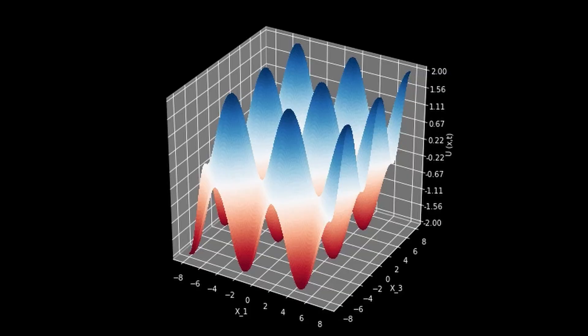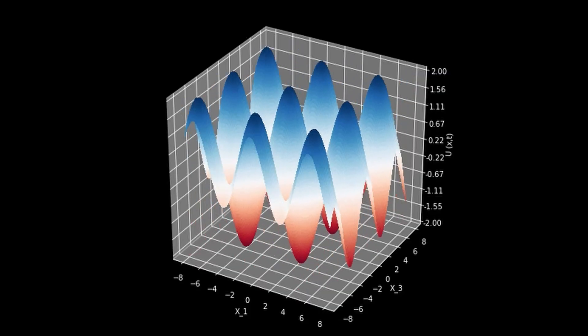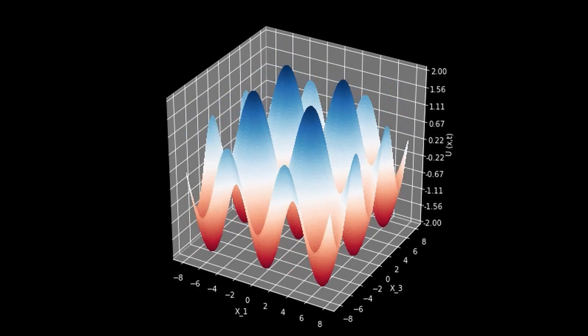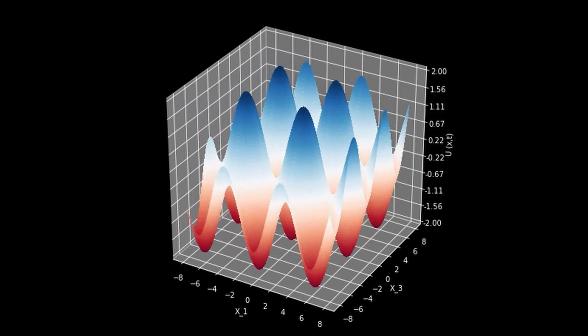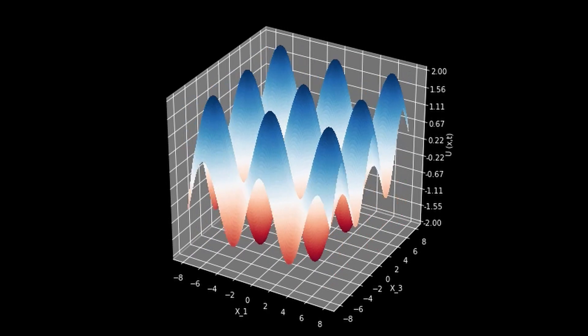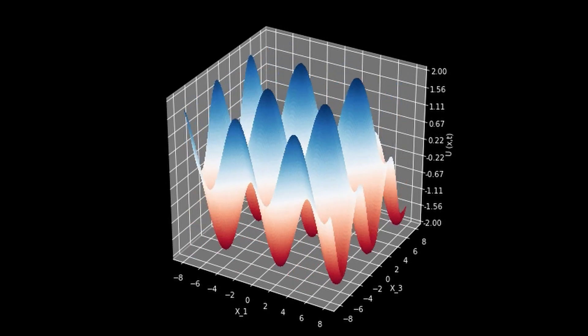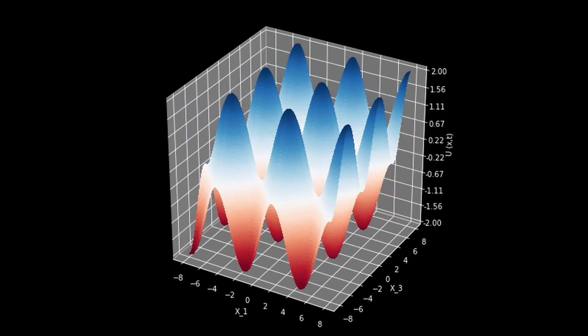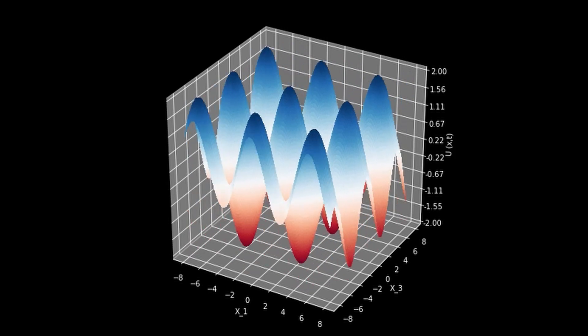Here are the main key properties of the wave function. First, probability amplitude: the wave function is a probability amplitude, which means that the square of the magnitude of the wave function gives the probability density of finding a particle at a particular location in space — in other words, it tells us the likelihood of finding a particle in a particular state. Second, normalization: the wave function must be normalized, meaning that the total probability of finding the particle must equal 1, achieved by integrating the square of the magnitude of the wave function over all space.